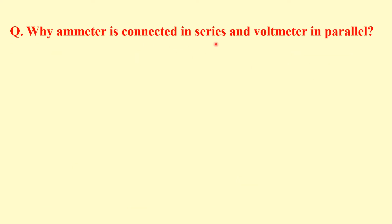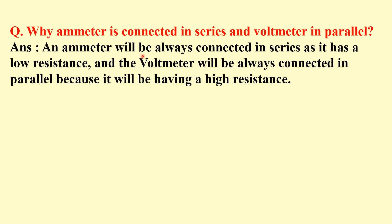Why is an ammeter connected in series and a voltmeter in parallel? An ammeter is always connected in series because it has low resistance. A voltmeter is connected in parallel because it has high resistance. If you connect an ammeter in parallel, most of the current will flow through the ammeter rather than through the components, which will give wrong results.